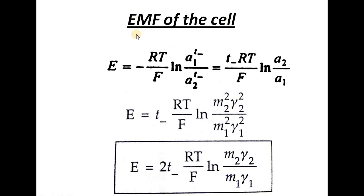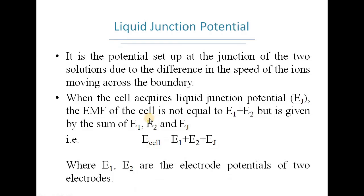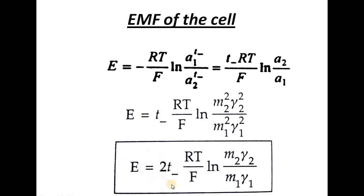Adding the electrode reaction with the liquid junction processes, the net reaction is: T⁻ gram equivalents of HCl transfer from solution of activity A2 to activity A1. Applying the Nernst equation gives E = T⁻ · RT/F · ln(A2/A1). Substituting activities by molalities and activity coefficients: E = 2T⁻ · RT/F · ln(M2γ2/M1γ1). This resultant EMF is obtained by combining the EMF from the electrode reactions and the EMF from ion transfer through the liquid junction.